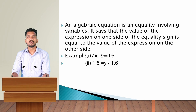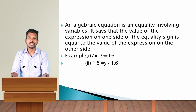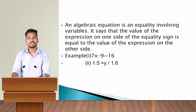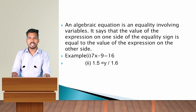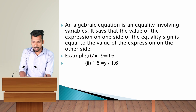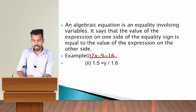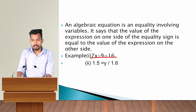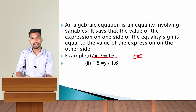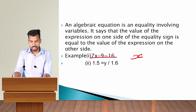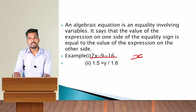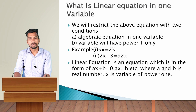An algebraic equation is an equality involving variables. It says that the value of the expression on one side of the equality is equal to the value of the expression on the other side. For example, 7x minus 9 equals 68 — this is a linear equation in one variable because we have only one variable, x. Another example is 1.5 equals y divided by 1.6, which is also a variable expression in one variable.